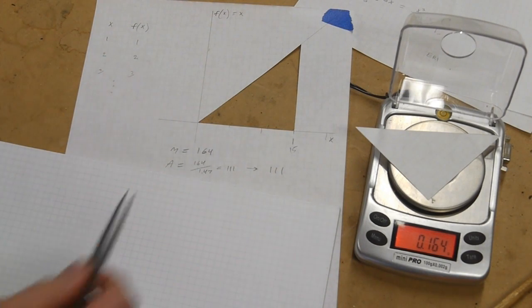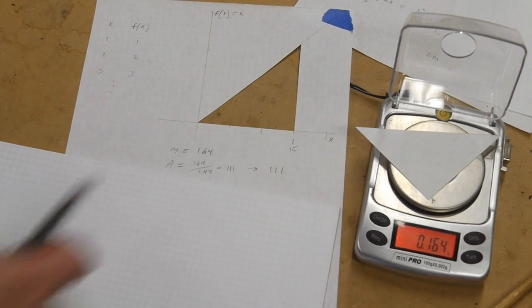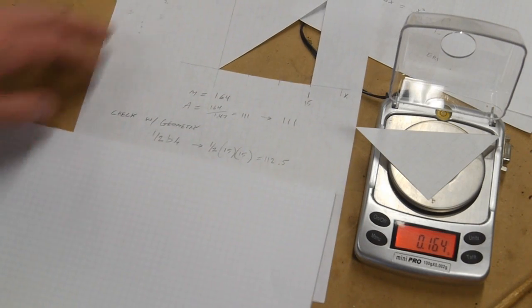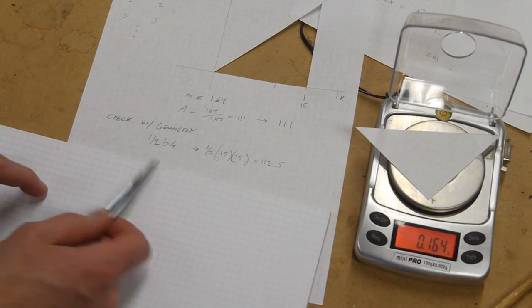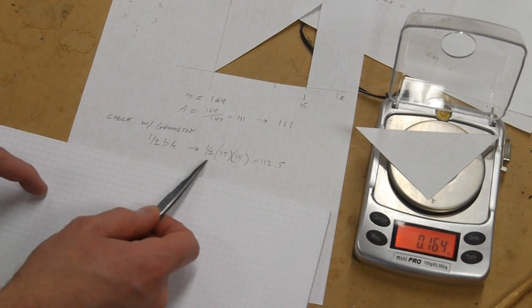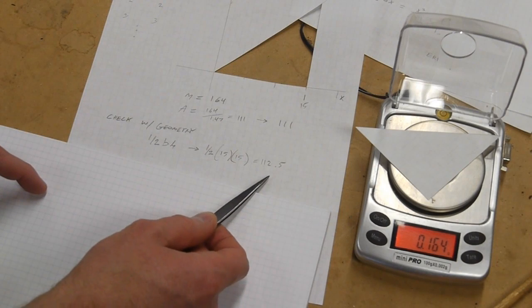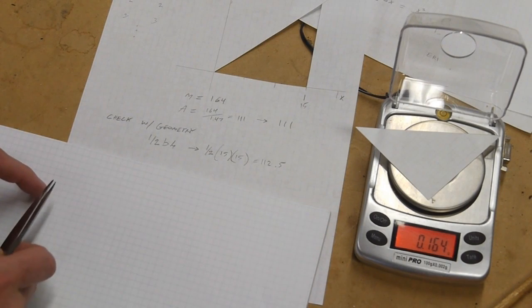And so what we're really getting here is the area under the curve. And we can check our math since we have geometry now, we know that the size of this triangle is one-half base times the height. So a half times 15 times 15 is 112.5, so pretty close to the 111 that we got through the mass measurement method.